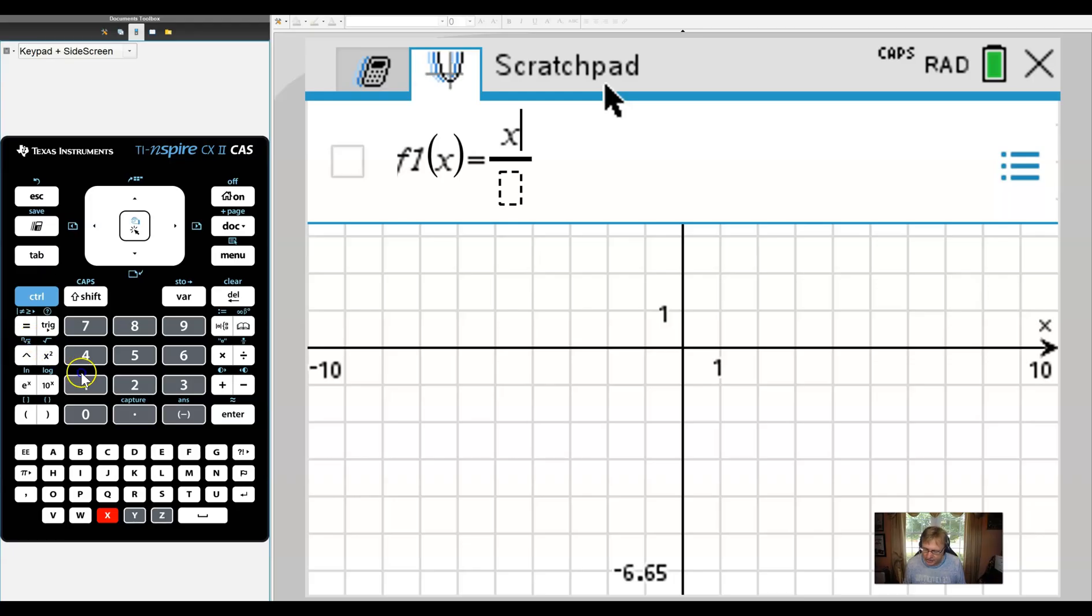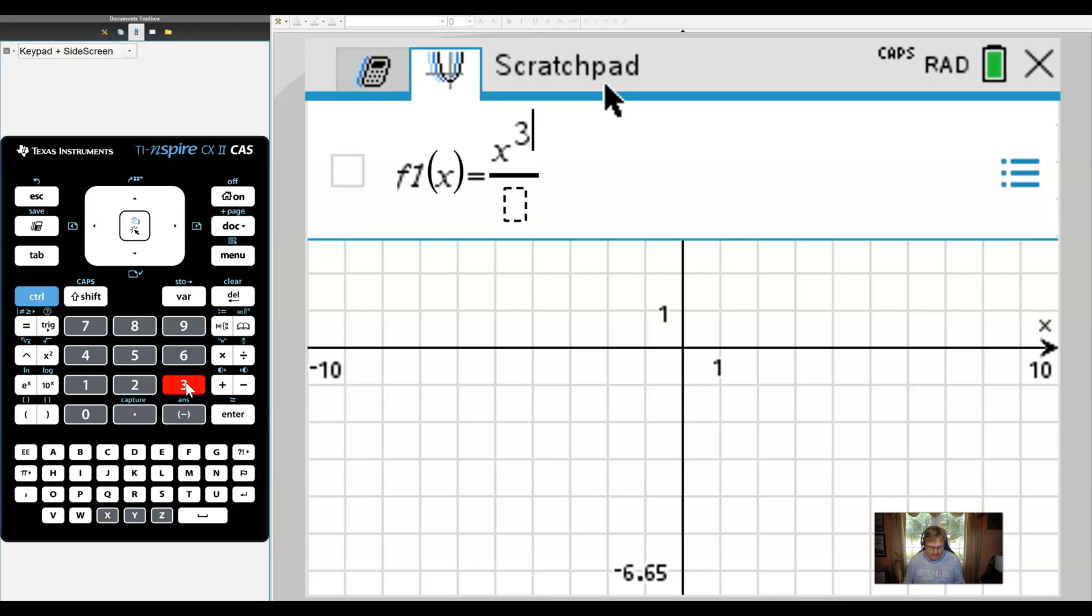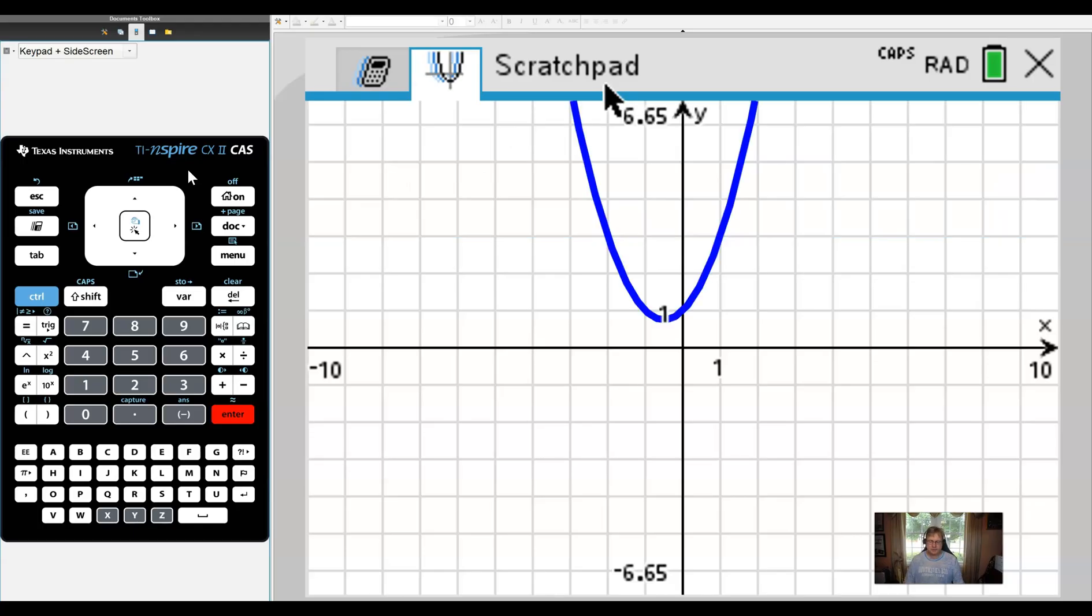I'm going to go x cubed on top. Make sure you get out of that exponent by pushing the right keypad button, and then you can add your minus 1 so the minus 1 is not an exponent or inside the exponent. And then we'll jump down to the denominator and enter x minus 1. And if all goes well, we should see pretty much the same graph.